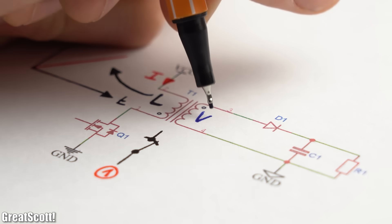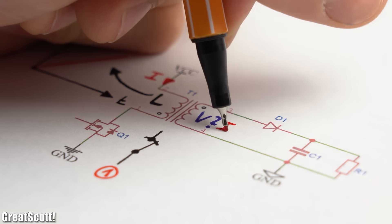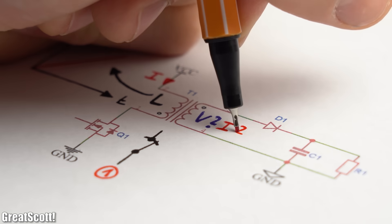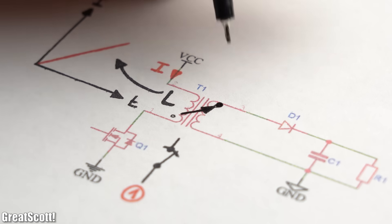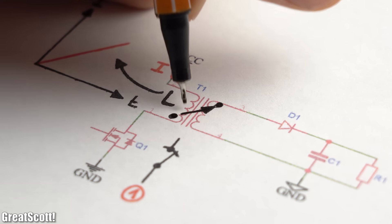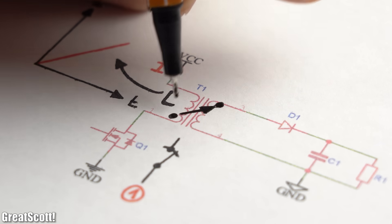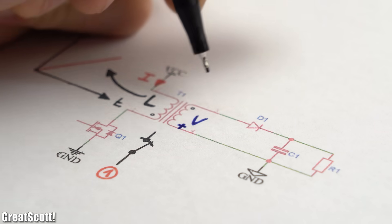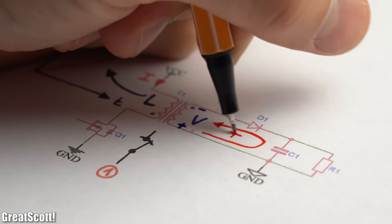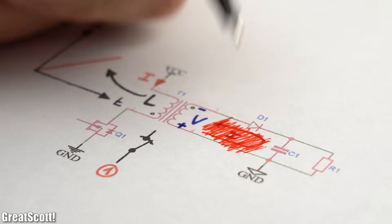But since current is now flowing through the primary side of the transformer, there should be a voltage and current flow on the secondary side, right? Well, actually no. Because of the winding direction of the primary site to the secondary site, identifiable by the two dots at the transformer symbol, there exists a voltage on the secondary side which would let a current flow reverse-biased to the diode, and that is of course not possible.